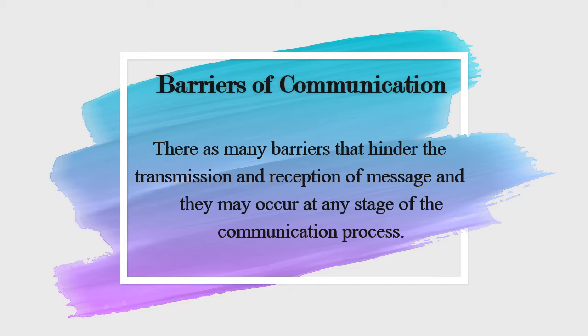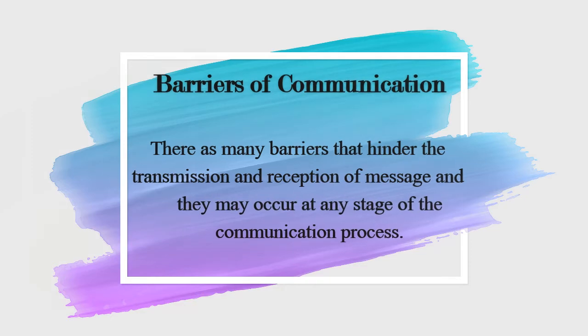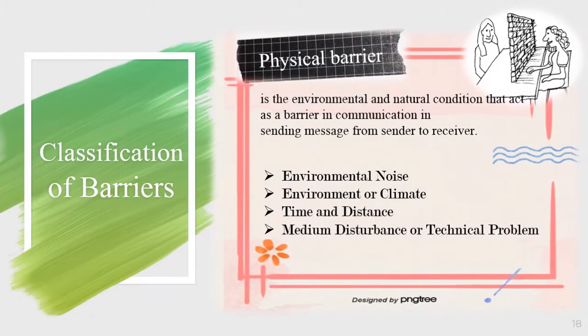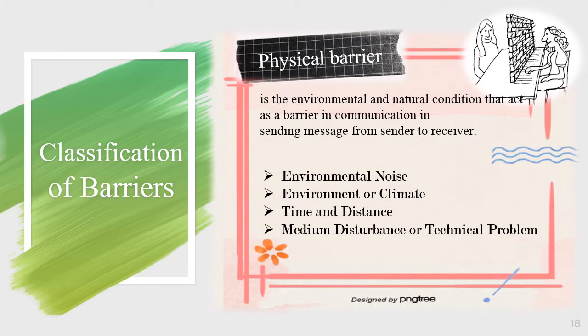The barriers of communication hinder the transmission and reception of messages. It affects the flow of communication. There are different classifications of barriers. The first is physical barrier — the environmental and natural conditions that act as a barrier in sending messages from sender to receiver. Examples include environmental noise, environment or climate, time and distance, medium disturbance, or technical problems.